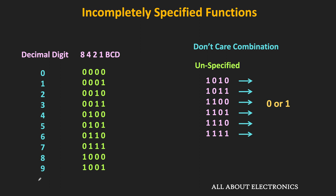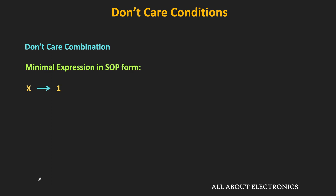Don't care combinations can be used in the Kmap for the simplification of the boolean function. Since the output is not specified for these don't care combinations, in the Kmap these don't care combinations are defined by the symbol x or d. During the minimization, it can be considered as either 0 or 1. While finding the minimal expression in the sum of product form, these don't care terms can be considered as 1. Similarly, when finding the minimal expression in the product of sum form, these don't care conditions can be considered as 0.